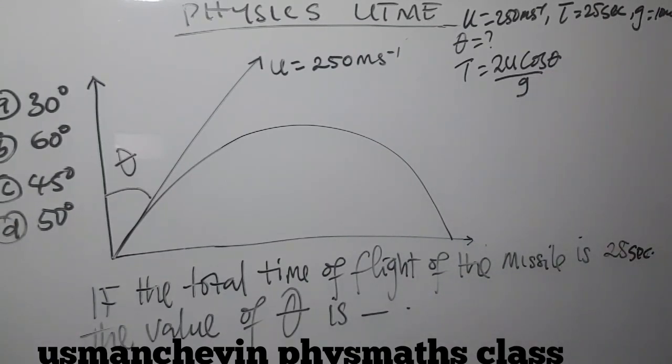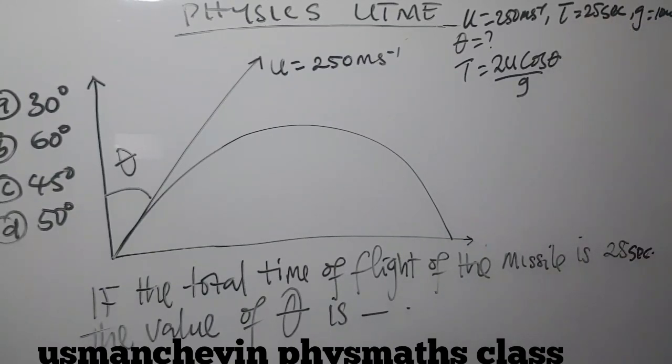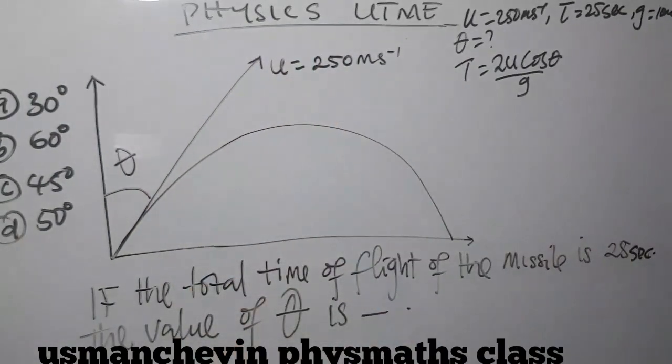I want you to note, instead of using sine, I'm using cos. Why? Because the angle theta is in between the vertical and the velocity.